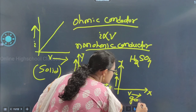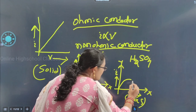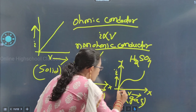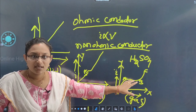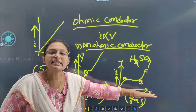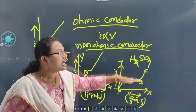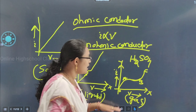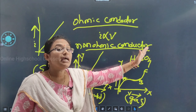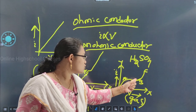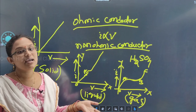In the case of gas, the graph is like this: from point O to A, it obeys Ohm's law — as the V value increases, the I value also increases. After that, from A to B, it becomes steady. Beyond B, it reaches a saturation value. That is the nature of the graph in the case of gas.